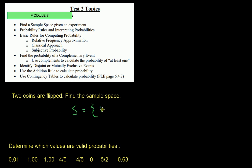You could have gotten two heads — a head and a head. You could have gotten a head and a tail. You could have gotten a tail and then a head. And then you could have also gotten a tail and a tail. So these are all the different possible outcomes when you flip two coins. That's how to find a sample space.